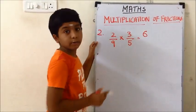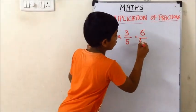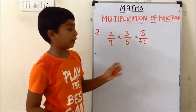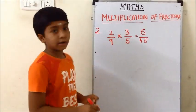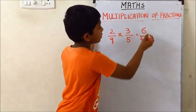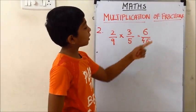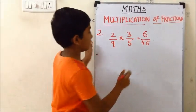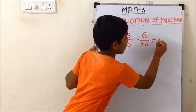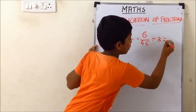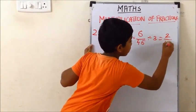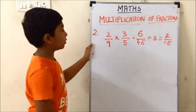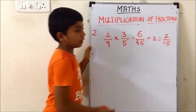9 into 5 is equal to 45, so the answer we got is 6/45. Next we need to simplify it. The numerator and denominator both appear in the 3 times table. Dividing by 3 gives 2 and 15, so the answer is 2/15.